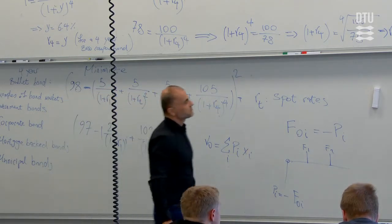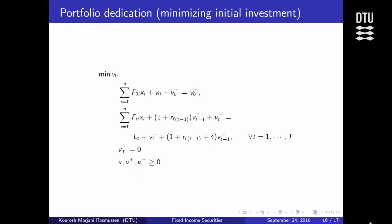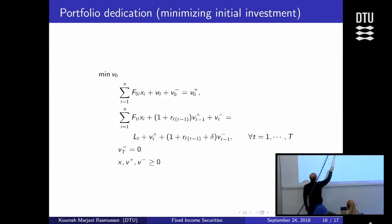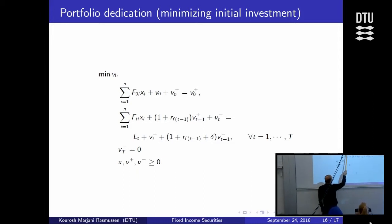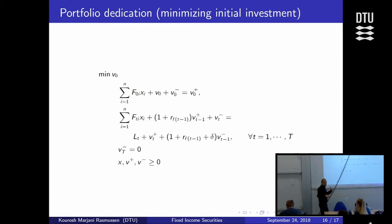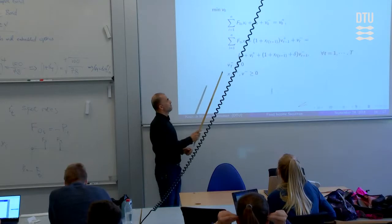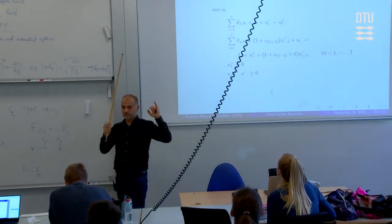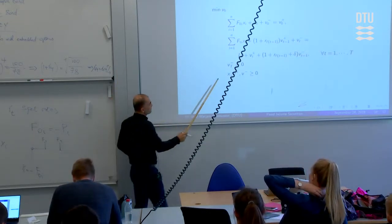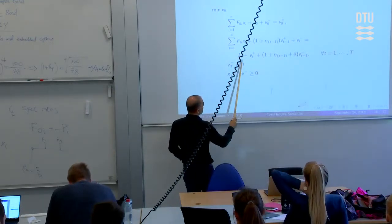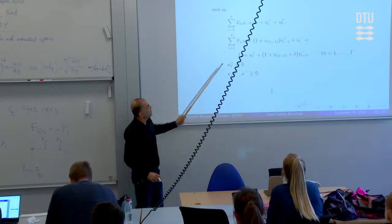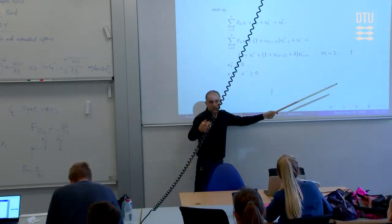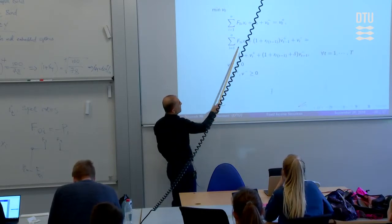If I allow borrowing and reinvestment, I can borrow some money on top of my budget to buy more bonds, or put some of the budget into the bank. That's the function of v⁻ and v⁺. More interesting is what happens between periods: starting from time one up to the final horizon T, there's a balance equation. On the left (asset side) is the cash flow from the bonds, plus what I reinvested in the bank one period earlier.